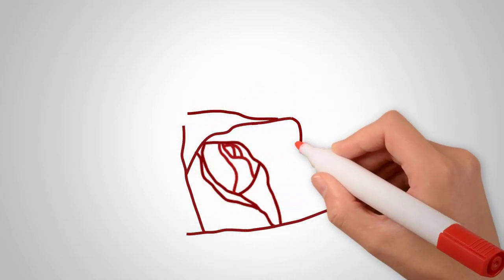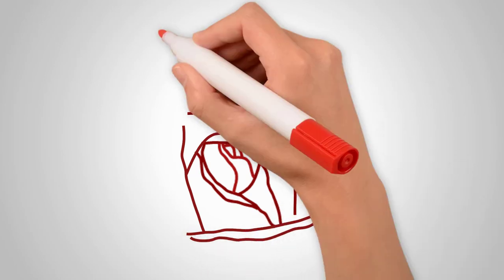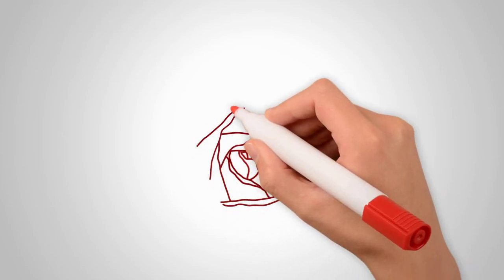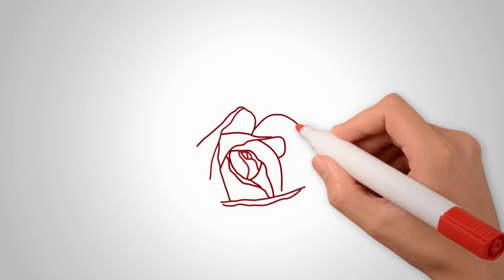Draw the middle of the rose. Draw a few petals collected in the middle of the rose. Now we draw a typical petal. Each petal departs from the center and forms an interesting pattern of roses.